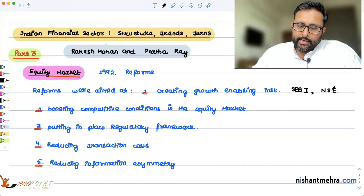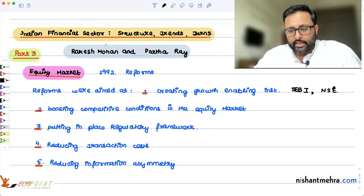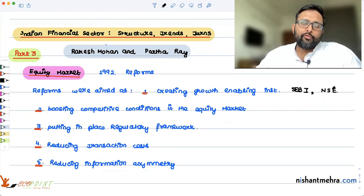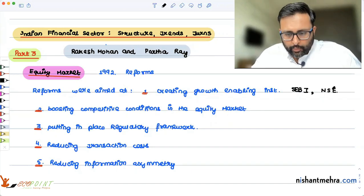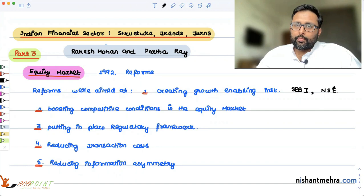SEBI was set up in 1988, although it was given its statutory powers in 1992 through SEBI Act of 1992. One of the main features of the establishment of SEBI was that you have to protect the interest of investors, promote the development of security markets, and at the same time regulate the securities market.